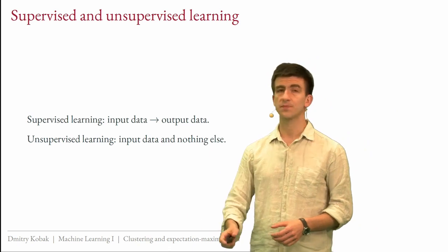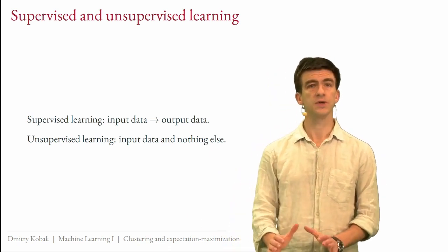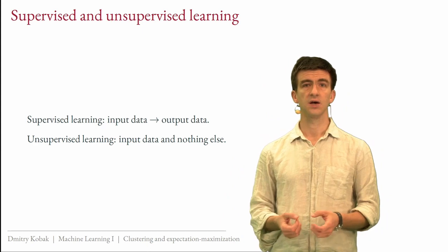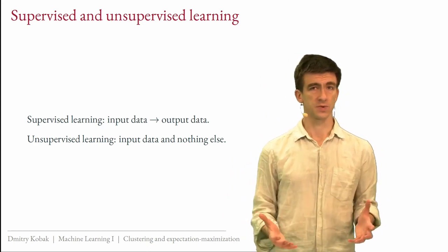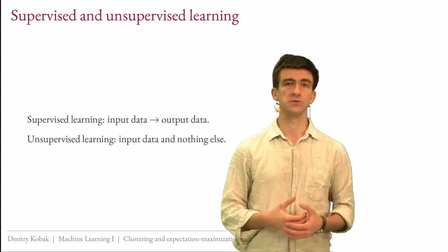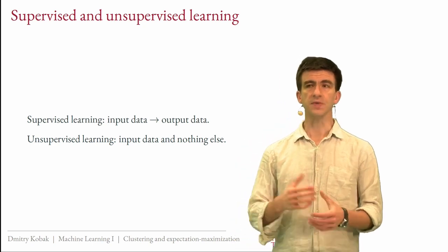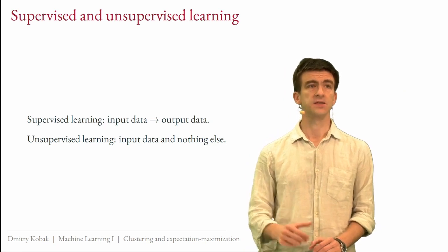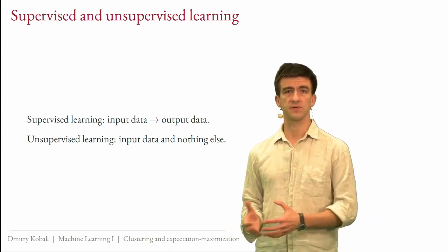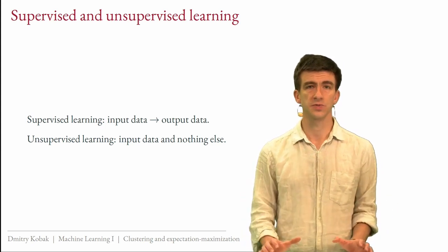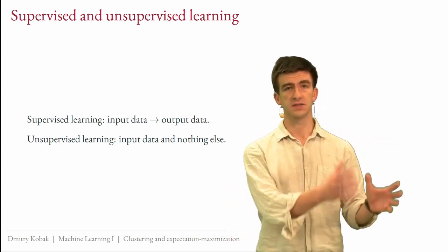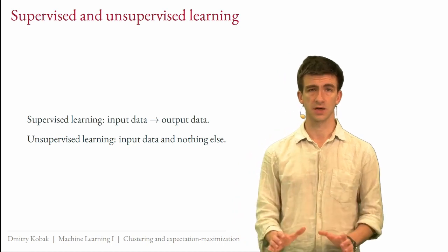In unsupervised learning, which is our topic from now on, we just have input data — we do not have output data, we don't have labels, we don't have any values to predict. We just have a dataset and we want to find some structure in it. Unsupervised learning is often connected to data mining. In this course we will talk about two aspects: dimensionality reduction and clustering. We start with clustering today.